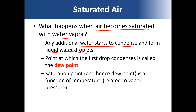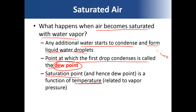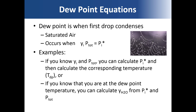When the air becomes saturated with water vapor, any additional water starts to condense and form liquid water droplets in the air, or it condenses onto a colder surface nearby. The dew point is the point at which the first drop condenses — water vapor aggregates to form a liquid droplet. That first condensation point is the dew point, and it is a function of temperature.